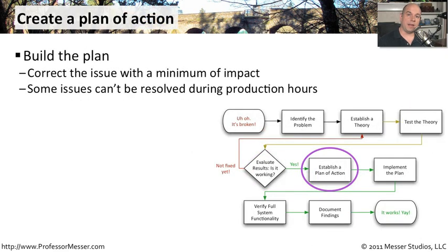Once we've done our testing and found the particular problem that needs to be resolved, we need to then put that plan into action. That is not something that can normally be done immediately — it may have to wait until after hours. Maybe the problem is very intermittent and you've realized it's related to a fiber patch cord that needs to be replaced. But since this is an intermittent issue and everybody is running fine during the day, maybe we can only do that in a normal change control window, waiting until after hours to perform the implementation.